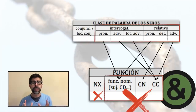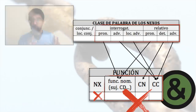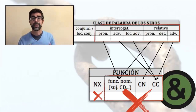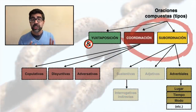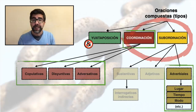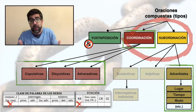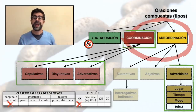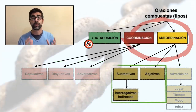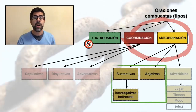Aparte de la función de Nexo, los pronombres, adverbios y determinantes desempeñan otras funciones posibles: sujeto, complemento directo, complemento circunstancial. Con los nexos propios de las oraciones compuestas por coordinación y con aquellos que introducen proposiciones subordinadas adverbiales, hay poco problema, porque aquí no hay más que conjunciones que solo funcionan como nexos. La dificultad la vamos a encontrar con los nexos que introducen proposiciones subordinadas sustantivas y proposiciones subordinadas adjetivas o de relativo.